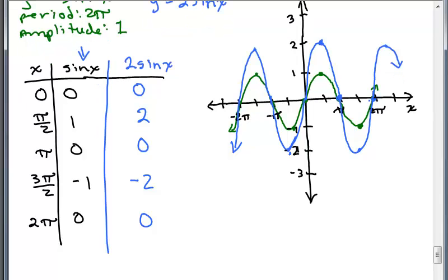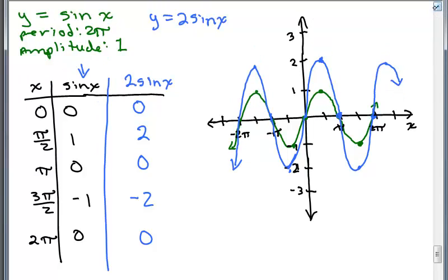So in blue, I have y equals 2 sine of x. Now, what's the period? The period still is in between 0 and 2 pi. That's a full cycle. So let's write that. The period is still 2 pi.